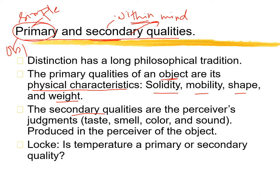Secondary qualities are the perceiver's judgment — taste, smell, color, sound. My taste differs from yours, my smell perception differs from yours. Some people are color blind. So these secondary qualities vary person to person. Locke then asks: is temperature a secondary quality or a primary quality? He concludes that temperature is a secondary quality.